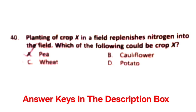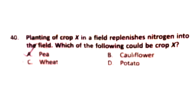Question 40: Planting of crop legumes in a field replenishes nitrogen into the soil. Which of the following could be the crop? Options: A) Beans, B) Cauliflower, C) Wheat, D) Potato. Legumes fix atmospheric nitrogen, so the right answer is Option A.